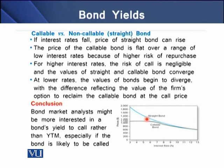This divergence reflects the value of the firm's option to reclaim the callable bonds at the call price. We can conclude that bond market analysts might be more interested in a bond's yield to call rather than the yield to maturity, particularly if the bond is likely to be called by the issuer.